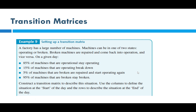Another example: a factory has a large number of machines that can be in one of two states — operating or broken. Broken machines are repaired and come back into operation, and vice versa. 85% of machines that are operational stay operating, 15% of operating machines break down, 5% of broken machines are repaired and start operating again, and 95% remain broken.